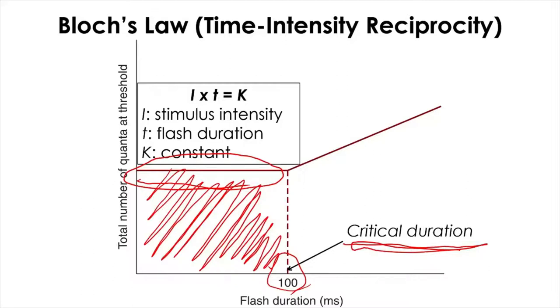This relationship is shown on the graph. The critical duration for scotopic vision is a hundred milliseconds.